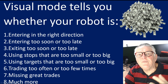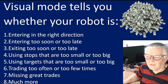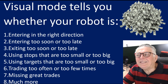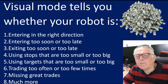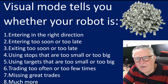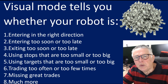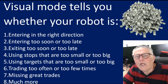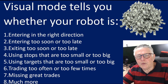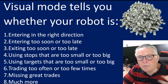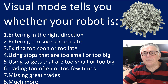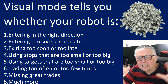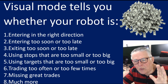Before that, let's look at why visual mode is so important. Visual mode tells you whether your robot is entering in the right direction, entering too soon or too late, exiting too soon or too late, using stops that are too big or too small, using targets that are too small or too big, trading too often, opening too many trades, or trading too few times.